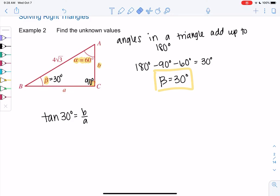So maybe I'll try sine or cosine of 30. Sine of 30 will be B over 4 root 3, right? Opposite over hypotenuse. We can solve this. Multiply both sides by 4 root 3. Then we get to do some unit circle practice as well. So B is 4 root 3 times sine 30.